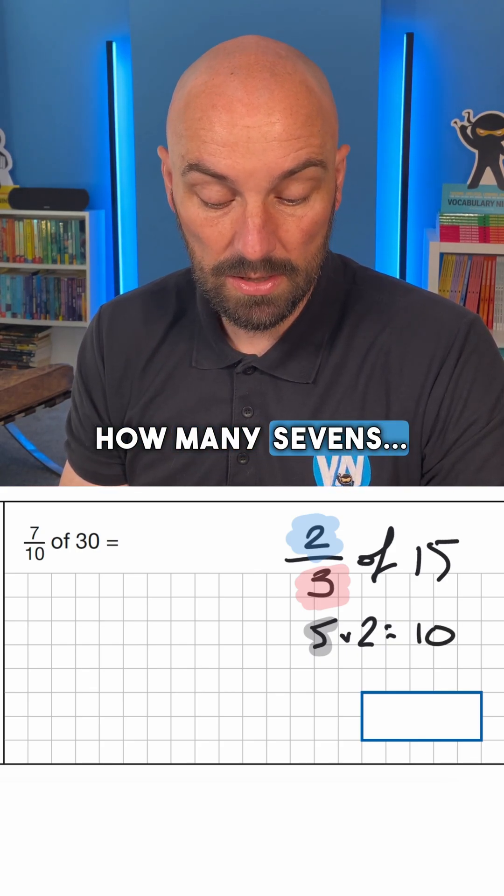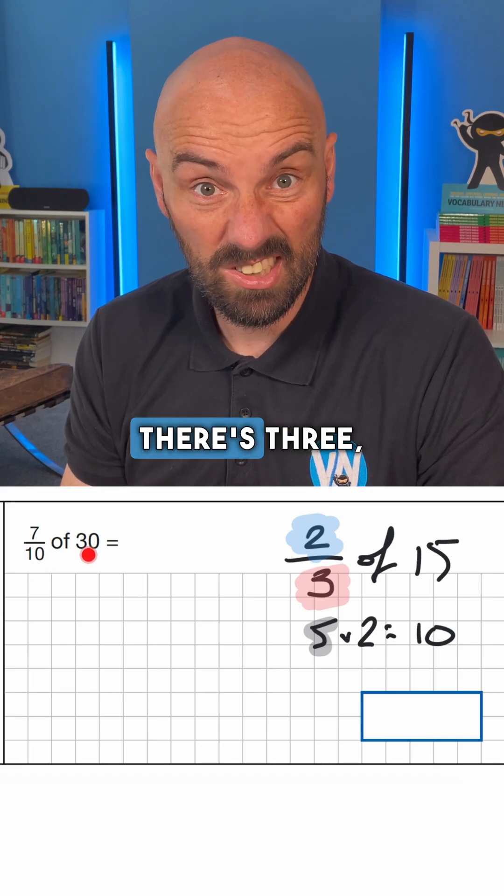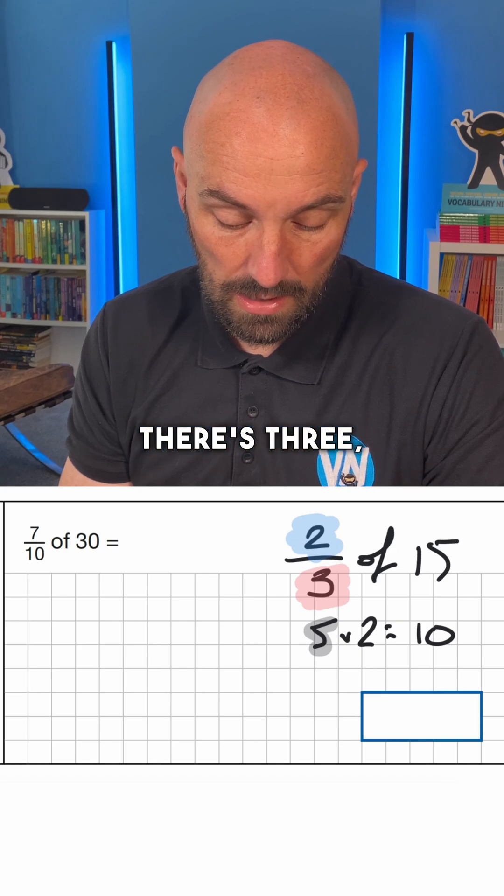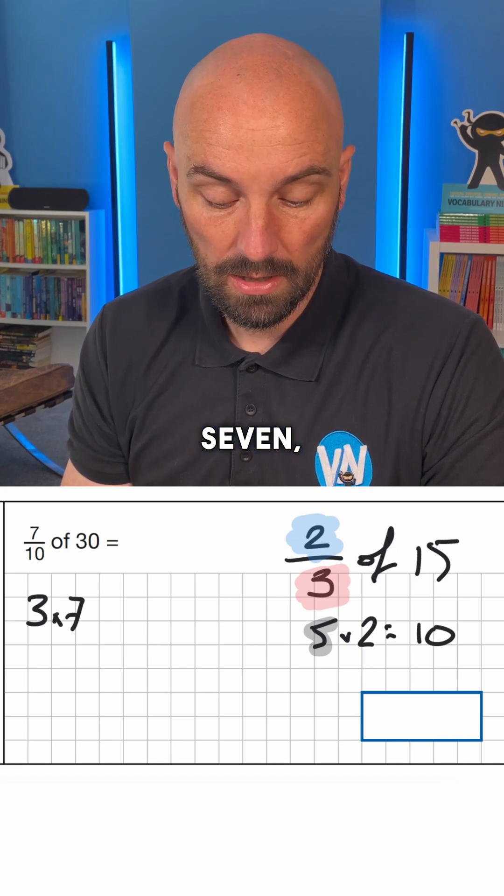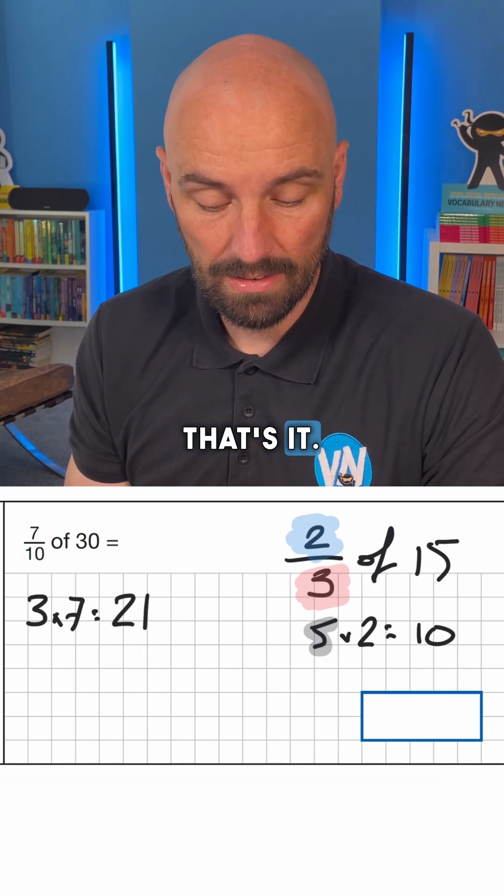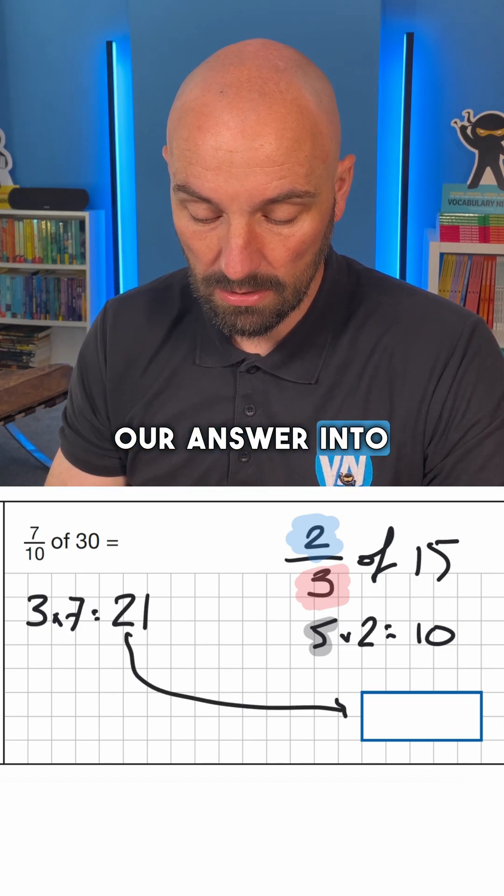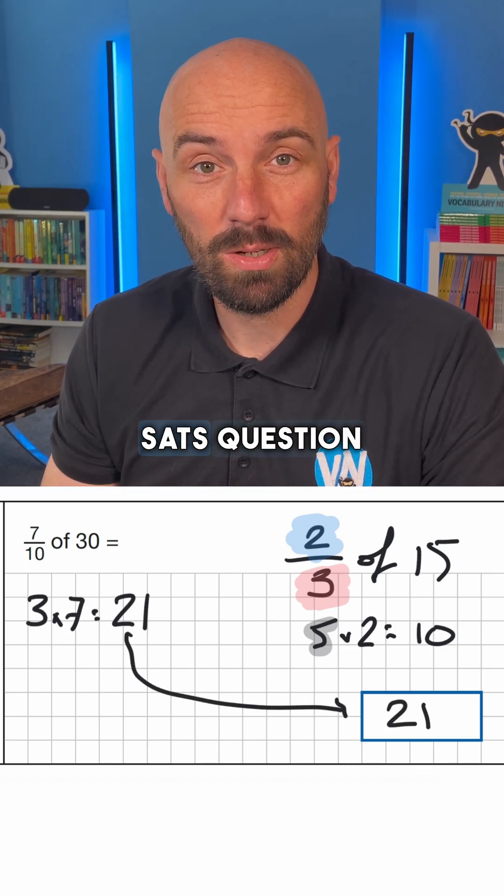How many 7's, sorry, how many 10's are in 30? Well, there's 3, isn't there? So we'll just make a little note of that. There's 3. And then I'm going to times that by 7, which is 21. That's it. That's the answer. We divide by the bottom, times by the top, and then we write our answer into the box. And that's another SATs question solved.